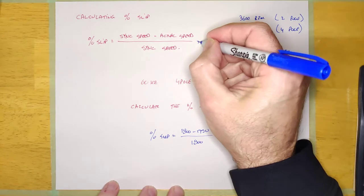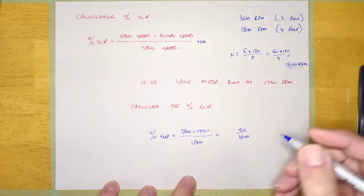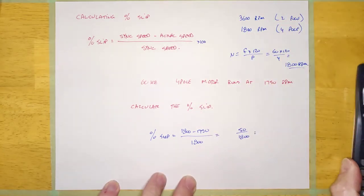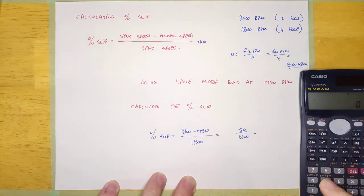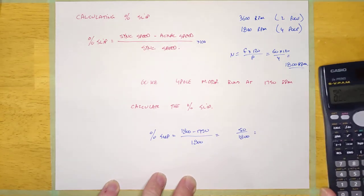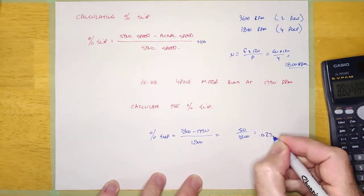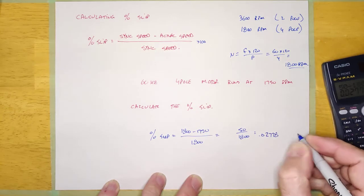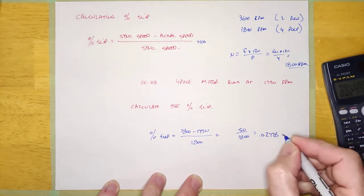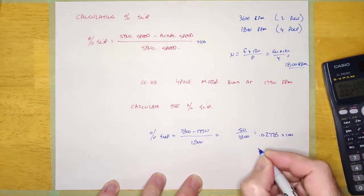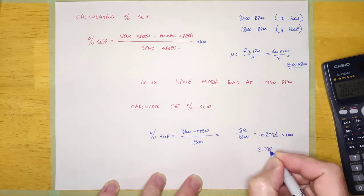And that's going to give you the percent it's slipping of the sync speed. And you have to actually multiply this by 100, or else it's going to be in a decimal. So if I go 50 over 1,800, it comes to 0.02778. And if I multiply that by 100 to get that into the percentage, it's going to be 2.778%.